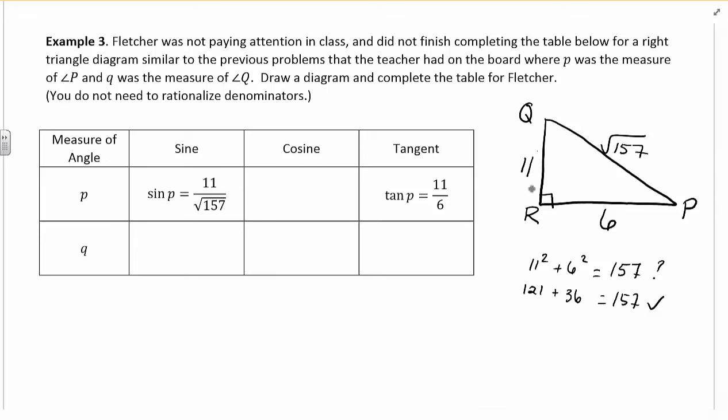Then we just have to complete the table. So now that I have the diagram, cosine, SOHCAHTOA. So sine is opposite over hypotenuse. Cosine is adjacent over hypotenuse. And we're dealing with P right now. So adjacent to P is the 6. The hypotenuse is the square root of 157. And there you go.